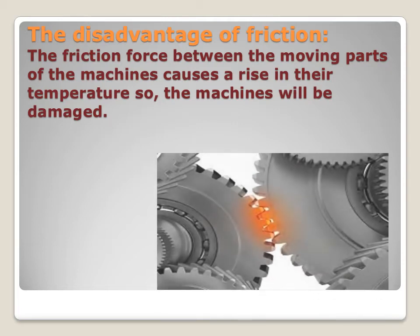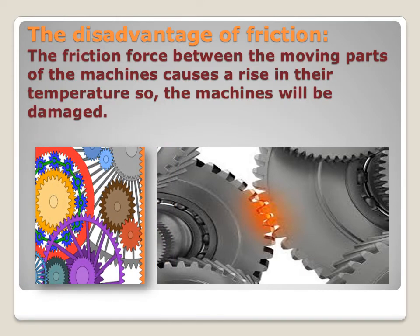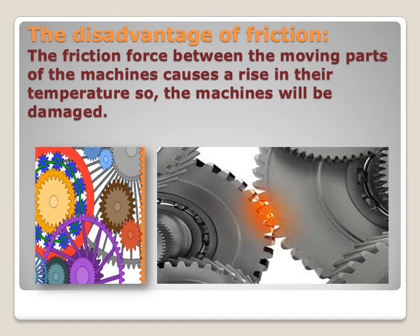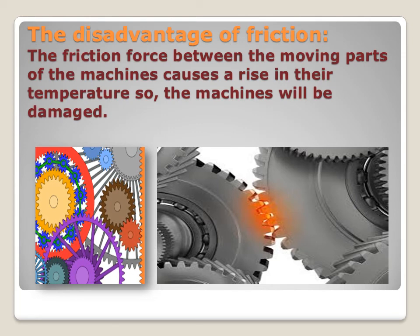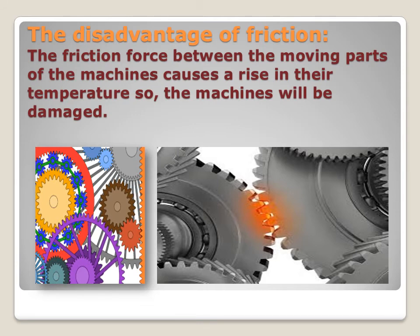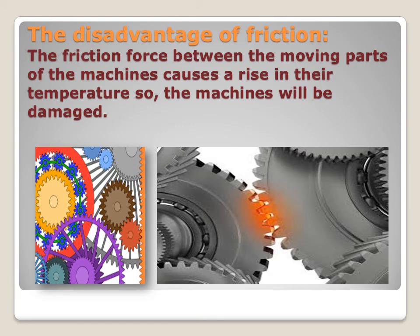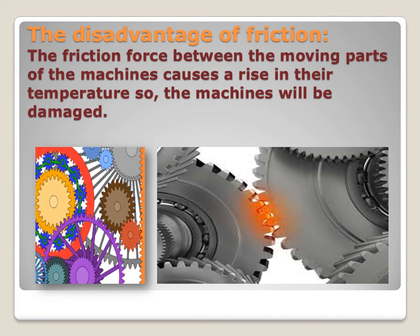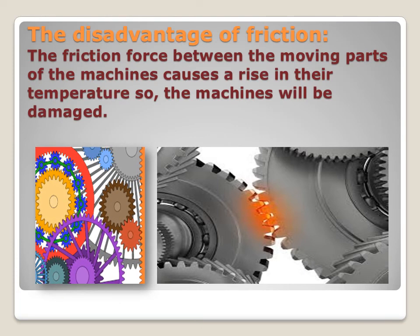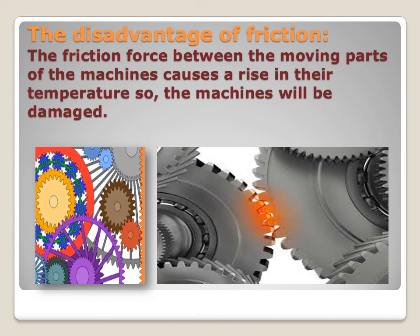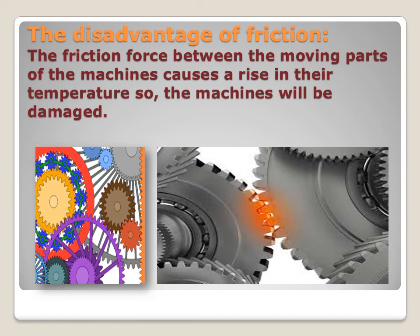Now we will talk about the disadvantages of friction force. The friction force between the moving parts of machines causes a rise in their temperature, which can damage the machines. When the internal parts touch each other, friction generates heat energy, raising the temperature, and this causes the machine to be damaged. This is a very important disadvantage of friction force.